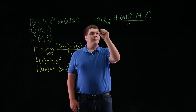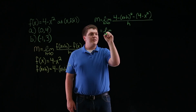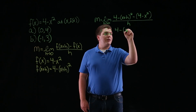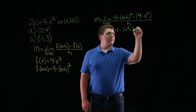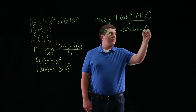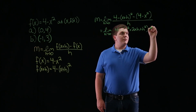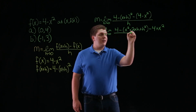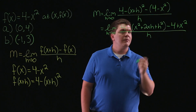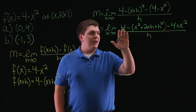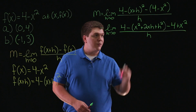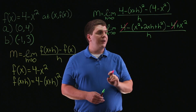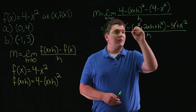Now we'll simplify. This is the limit as h approaches 0 of 4 minus, expanding, we have x squared plus 2xh plus h squared. We'll distribute this negative sign, so we're subtracting 4 and adding x squared, and we're dividing this whole thing by h. We have a positive 4 and we're subtracting a 4, so those cancel. We have a negative x squared plus an x squared, so these cancel as well.